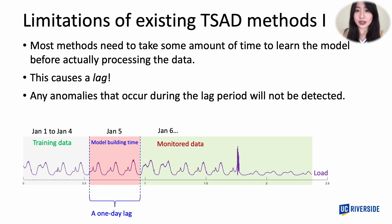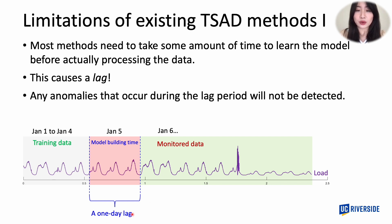Although many existing anomaly detection methods can support online monitoring, we still have a problem with lag. For example, suppose we have training data from January 1st to 4th. Starting from January 5th, we want to monitor our data. However, for most methods, they cannot monitor right after the request. Instead, they may take another day to build a model. This means that on January 5th, we cannot detect any anomalies. For some deep learning models, one day of CPU time is actually a realistic number.